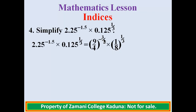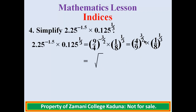We need to remove the negative index. To remove the negative sign we take the reciprocal of 9 over 4, which is 4 over 9. So we now have the index as positive 3 over 2, times 1 over 8 raised to power 1 over 3. Applying the fractional index, we consider the denominator first. The denominator is 2, so we express it as the square root of 4 over 9, with the numerator 3 as the power. The 3 is the power and the 2 represents the square root.